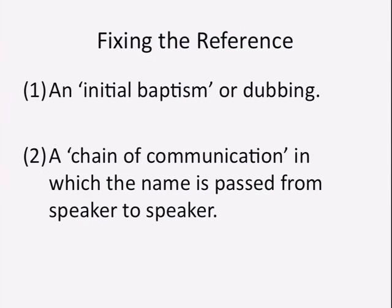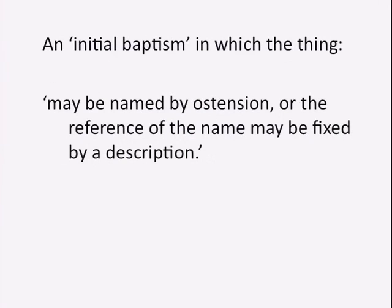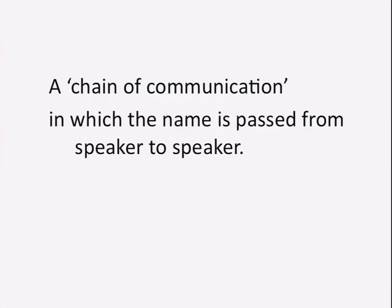As this chain of communication spreads, clusters of descriptions relating to you are generated. What matters is not who best matches those descriptions, but that you are the one generating the whole thing — you are the source. There are two steps: the initial baptism and the subsequent passing of the name. The key idea is how the cluster of descriptions is generated, not what best matches it. The initial baptism can happen by ostension — pointing to the thing — or by description, like 'let's call the silver round thing that comes up every night the moon.'